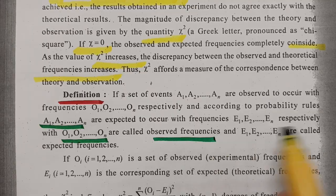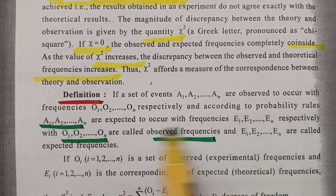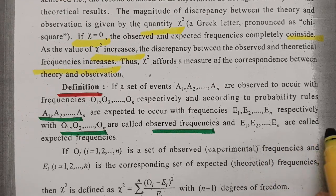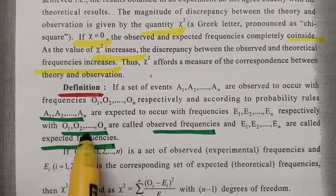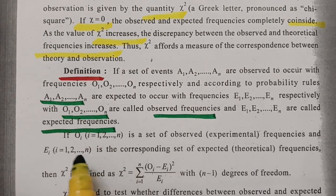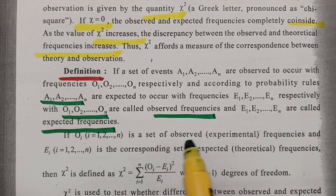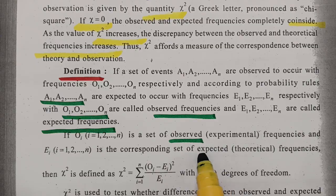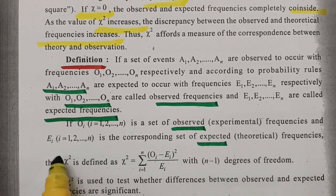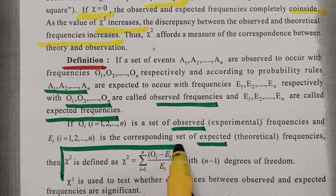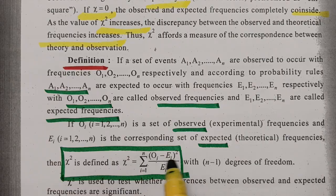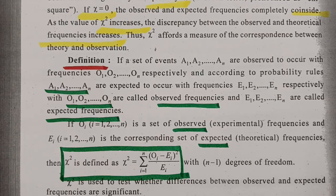O1, O2, O3 are the observed frequencies, and E1, E2, E3 are the expected frequencies. If Oi is the set of observed frequencies and Ei are the corresponding expected frequencies, then chi-square is defined as: chi-square equals sigma from i=1 to N of (Oi minus Ei) squared divided by Ei, with N minus 1 degrees of freedom.